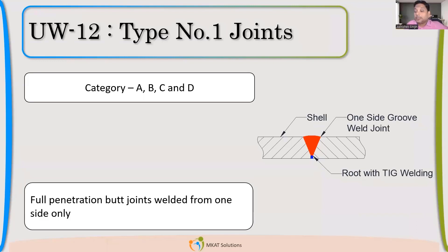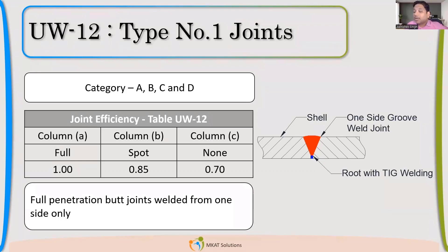The third configuration is welding from only one side. I can weld the root with TIG, and that will also achieve full penetration — but you need expertise. Just doing TIG welding will not ensure it; you have to do qualification, testing, qualify the welder, and qualify the procedure. Then only this becomes a qualified type number 1 joint. So there are only these three configurations permitted for type number 1. No other weld will give you efficiency as 1.